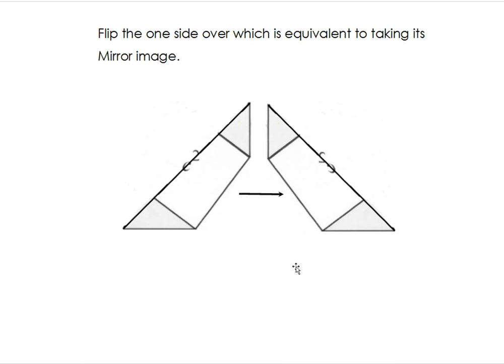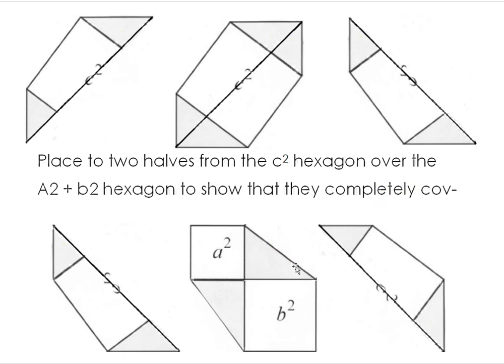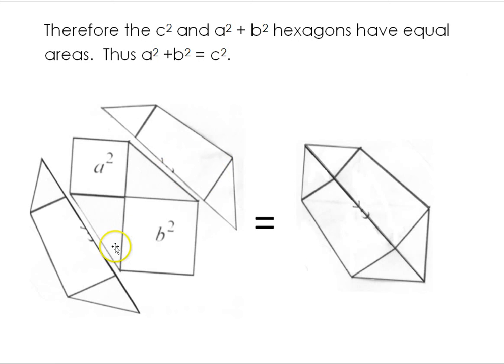And now we're going to see if we can match the two halves of the hexagon into the a² + b² hexagon. So here's the a² + b² hexagon. So we have the two halves of the c² hexagon. And we're going to flip this one over and put them together. As they get together, and then we put them together, you can see it's a perfect fit.